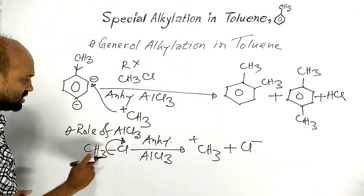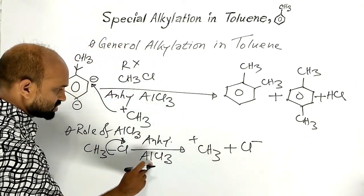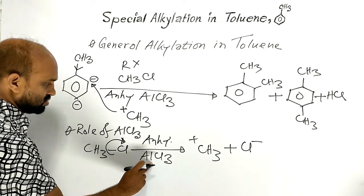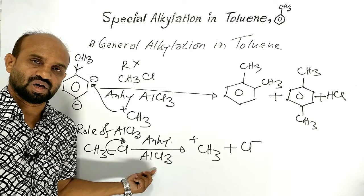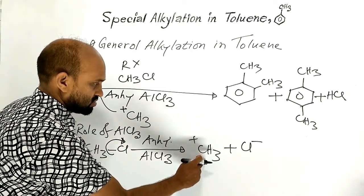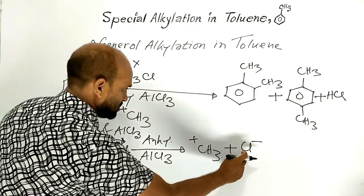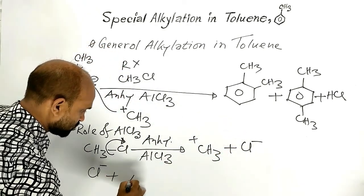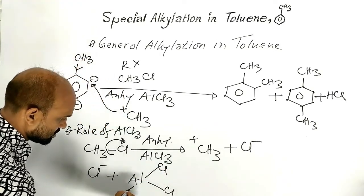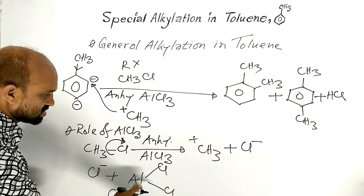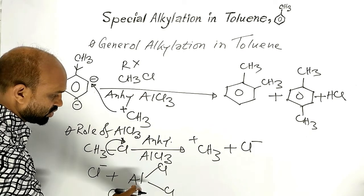From methyl chloride, a methyl carbocation is formed in the presence of anhydrous aluminum chloride. So anhydrous aluminum chloride helps produce the methyl carbocation. In the next step, the chloride ion combines with anhydrous aluminum chloride, which is a kind of Lewis acid.